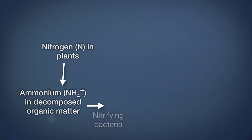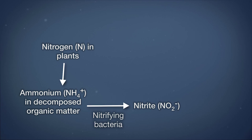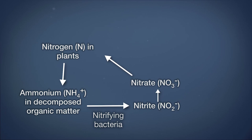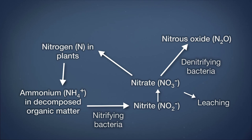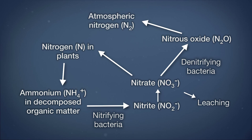The ammonium undergoes transformations by bacteria and becomes nitrite and then nitrate. That nitrate might get taken up by plants. It might get leached out into the groundwater or into stream water and end up in the oceans, or that nitrate might get converted by denitrifying bacteria to N2O, nitrous oxide, which might ultimately become N2 gas again, and the nitrogen cycle is complete.